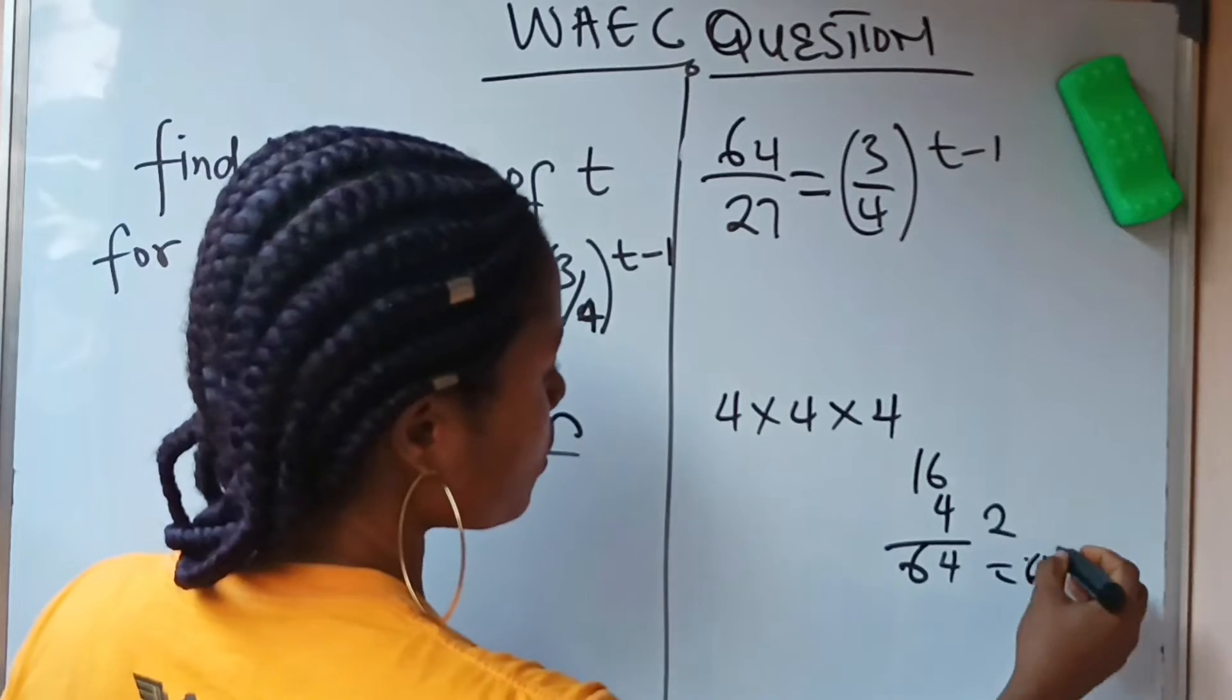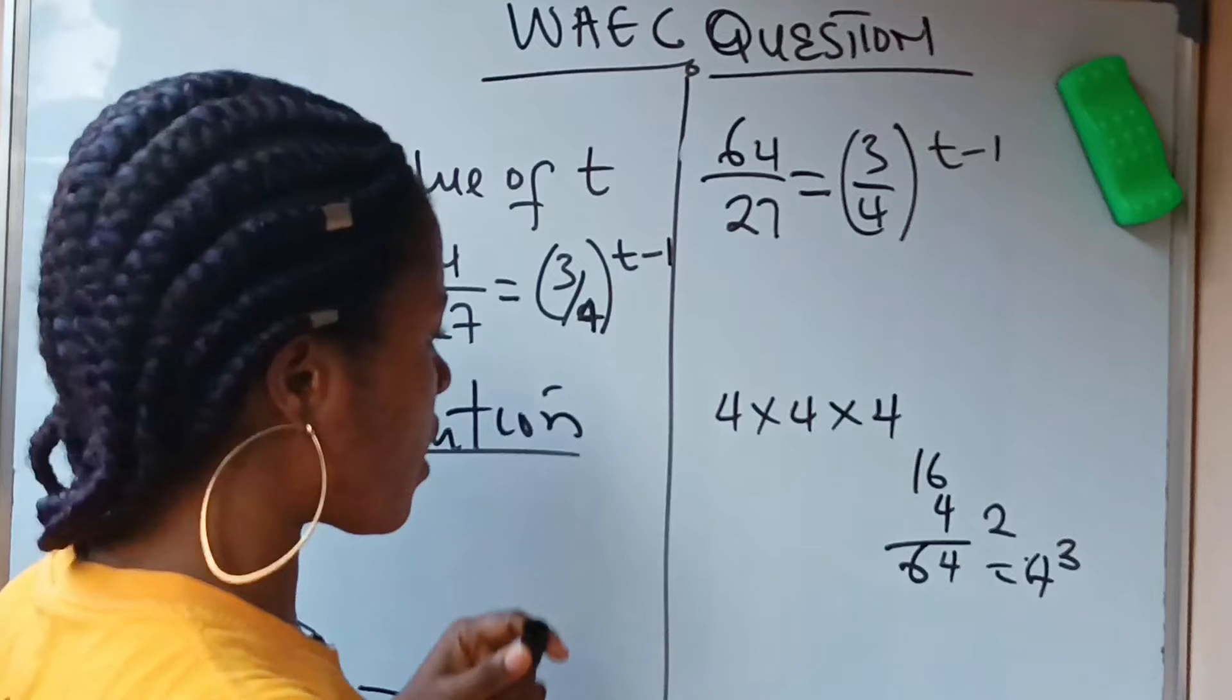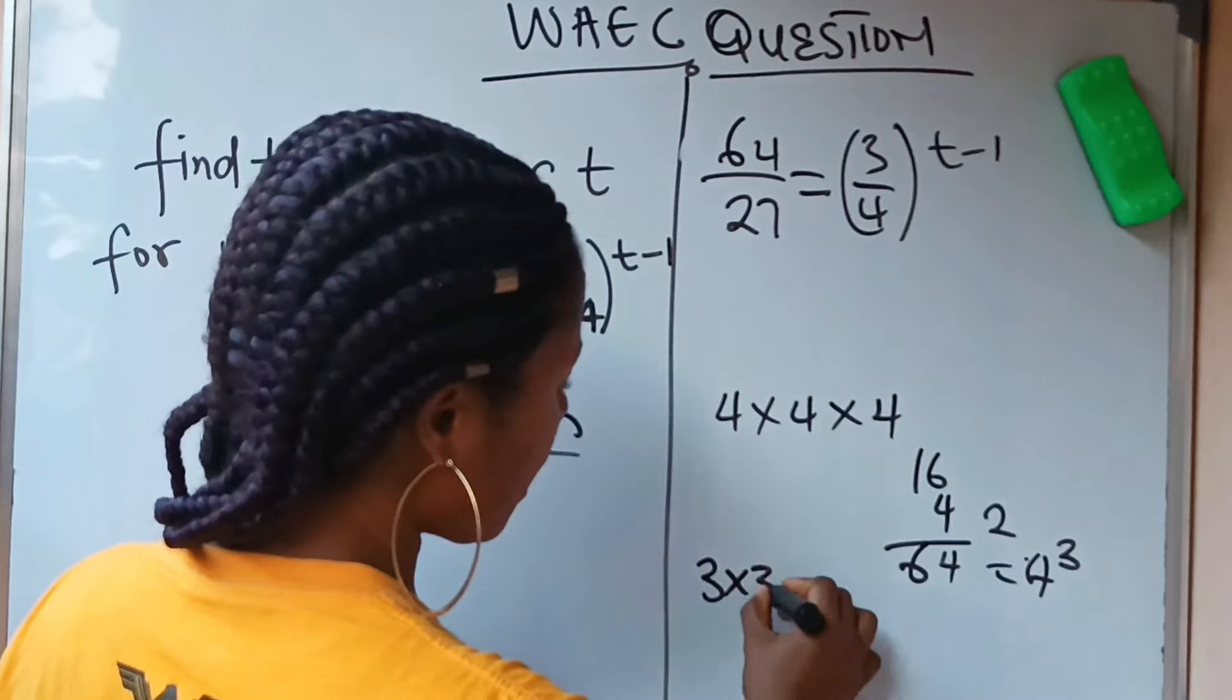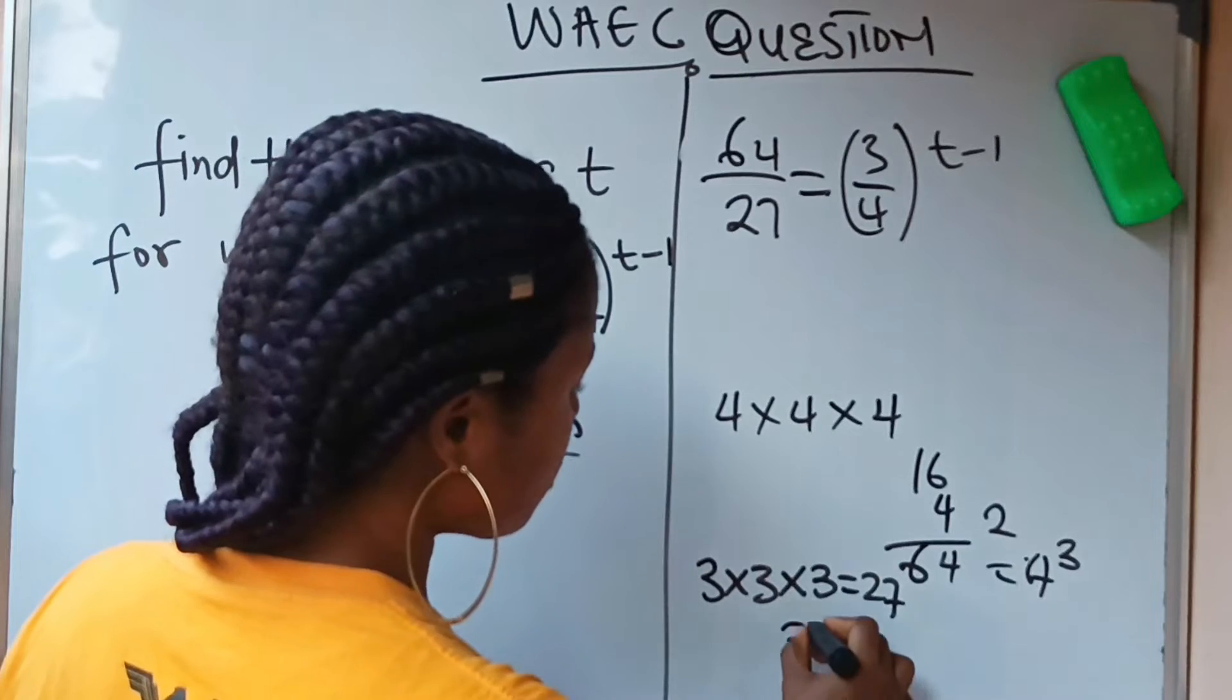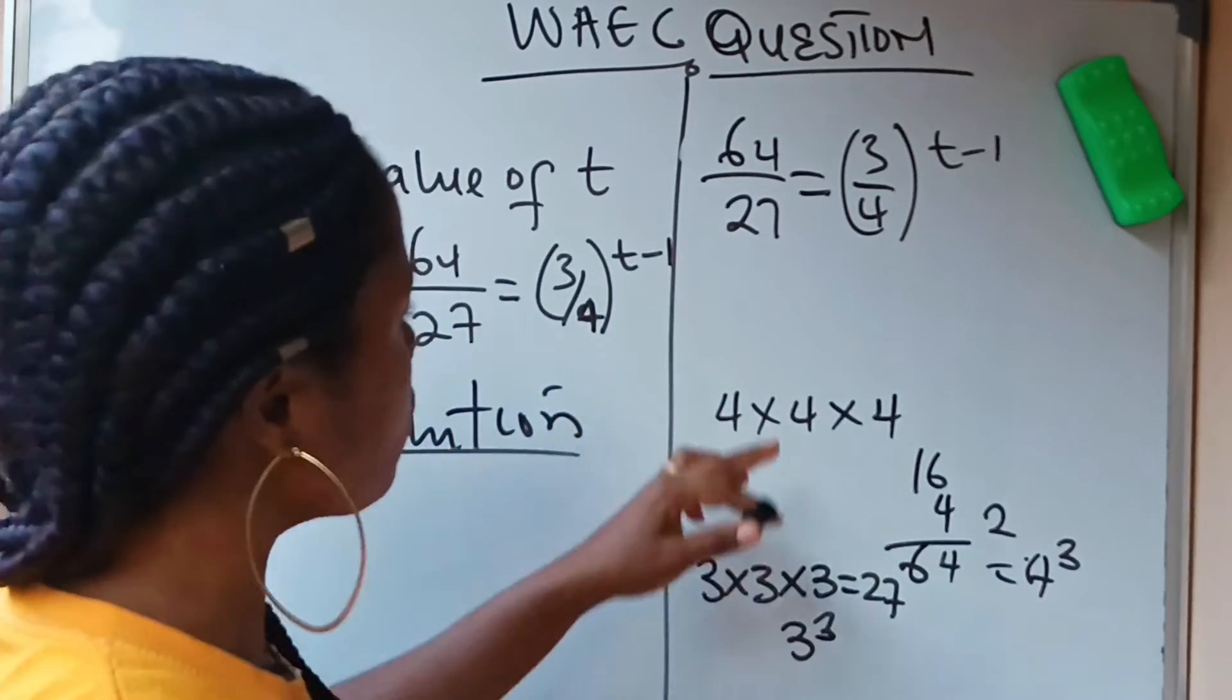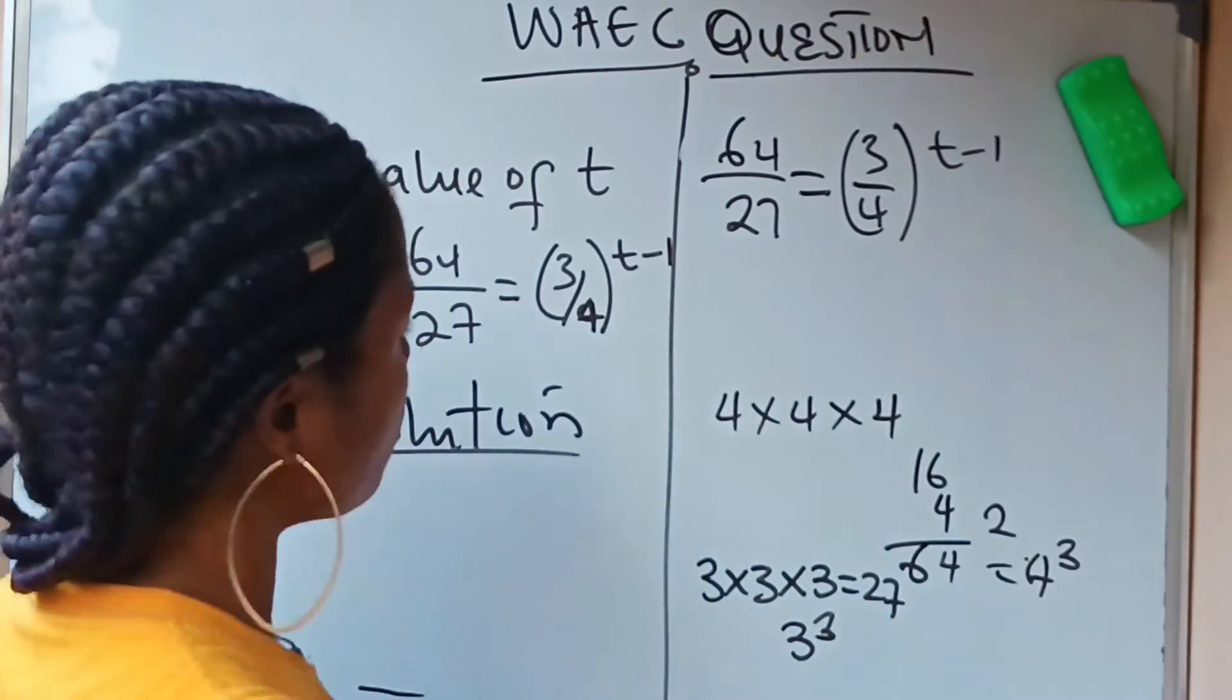For 27, 3 raised to the power of what? 3 times 3 is 9, 9 times 3 is 27. So 27 is 3 raised to the power of 3. So I'm going to replace this 64 now with 4 raised to the power of 3.